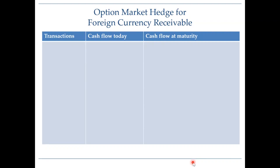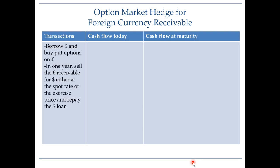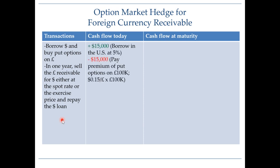The third hedging strategy available for foreign currency receivables is the options market hedge. This involves borrowing dollars today and buying put options on pounds. Then in one year's time, depending on the spot exchange rate, we will either sell our pounds at the spot rate or exercise the put option and sell our pounds at the strike price. We will obviously choose whichever option is more beneficial. Let's break it down and look at the numbers.